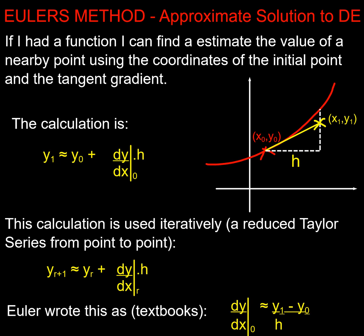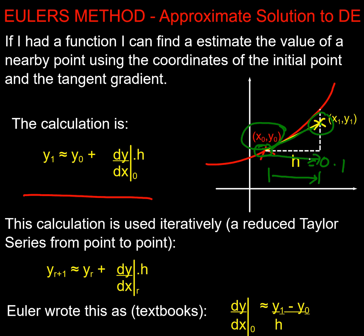So let's have a look at the simplest version of this formula. If I start at my point x0, y0, I'm at height y0 and I decide to move across to the right a distance h, which I'm going to say is 0.1 — a small value. Then I could predict where this next point is by just using the tangent to whatever my curve is. I just need to know where I start from, what my gradient is, and how far I'm travelling. So my new y value is going to be my start point plus the gradient at this point times h, the distance.